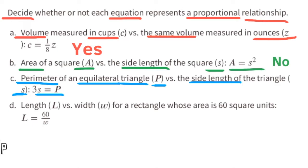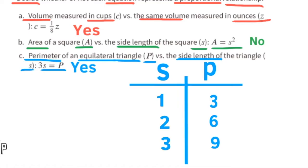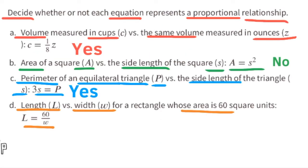Part c: perimeter of an equilateral triangle p versus the side length s. The equation is 3s = p. Yes, this represents a proportional relationship. Since there are three sides, you multiply the side length by 3. For example, side 1 × 3 = perimeter 3; side 2 × 3 = perimeter 6; side 3 × 3 = perimeter 9. The constant of proportionality is 3.